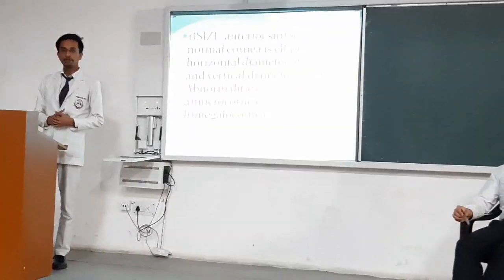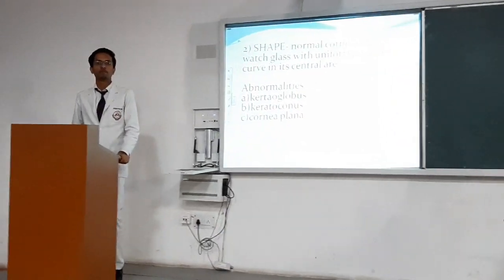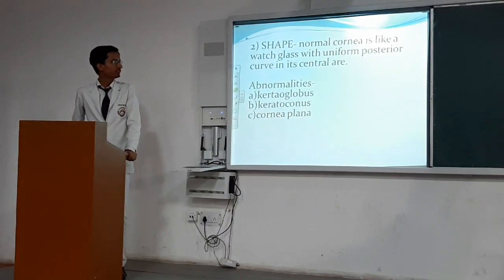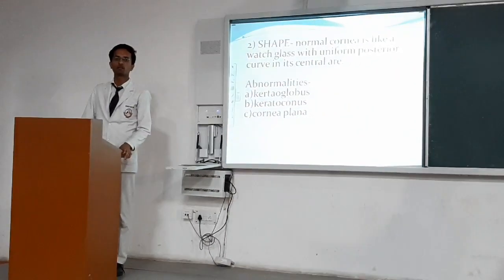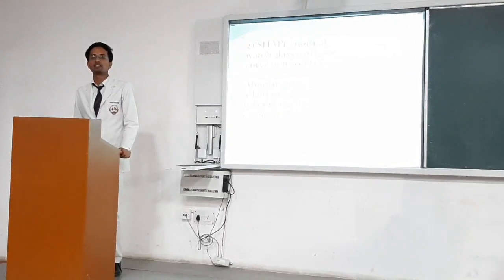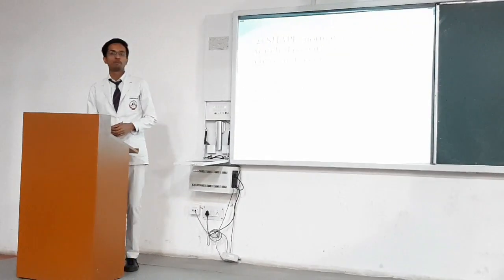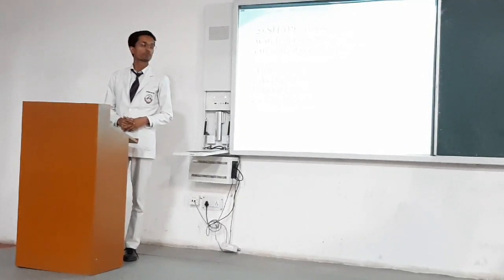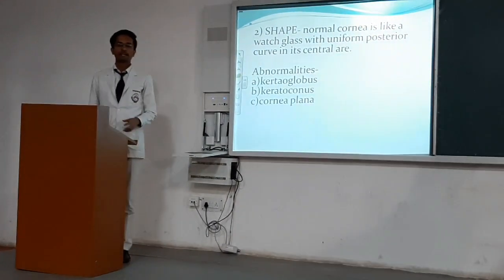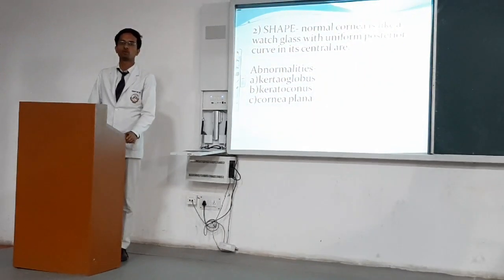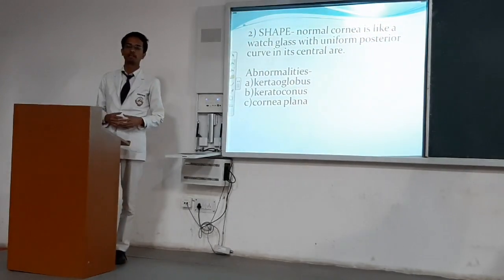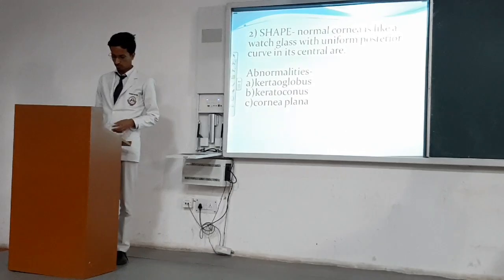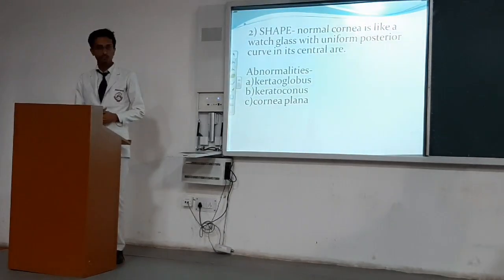Megalocornea is a condition in which the anterior diameter of the cornea is increased. Regarding shape, the normal cornea is like a watch glass with a uniform posterior curve in its central area. Abnormalities can include keratoglobus, an ectatic condition in which the cornea becomes thin and bulges out like a globe; keratoconus, also an ectatic condition in which the cornea becomes cone-like; and cornea plana, a condition in which the cornea becomes flat, which can result due to severe hypotonia and phthisis bulbi.